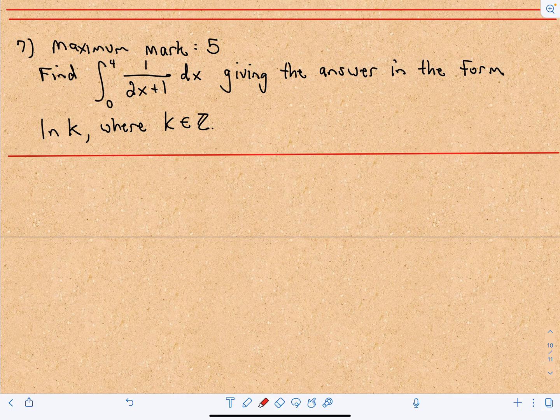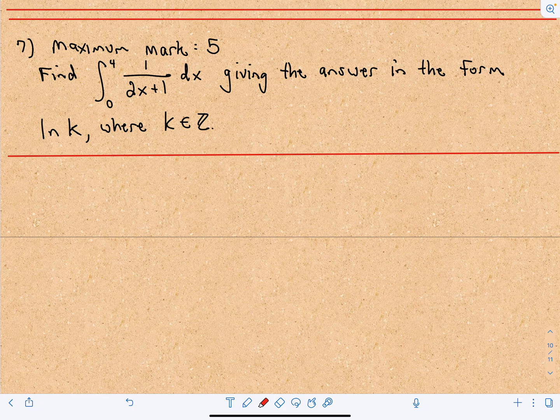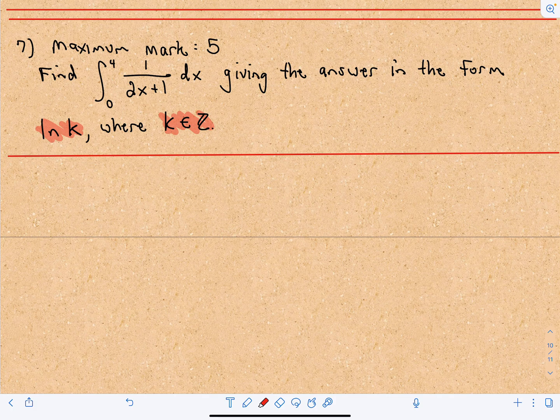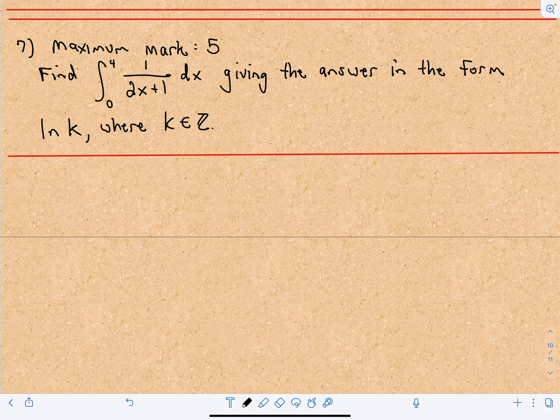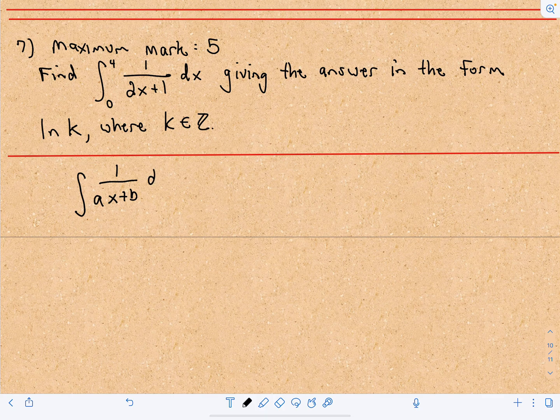In this problem, we have to evaluate the definite integral from 0 to 4 of 1 over 2x plus 1, giving the answer in the form ln k, where k is some real number. A couple things to discuss briefly. I think this formula is just something you're expected to know. So I'm going to do an indefinite integral first: the integral of 1 over ax plus b dx,